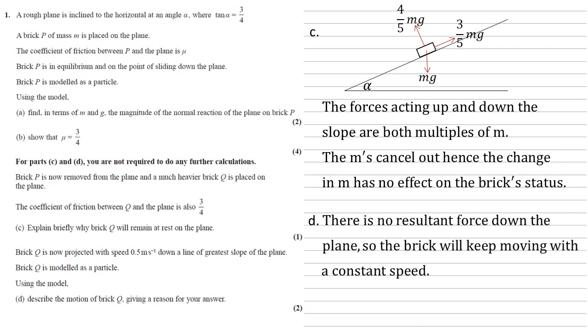Well, there's no resultant force down the plane. Our forces balance each other out. So without a resultant force, the brick will keep moving with a constant speed.